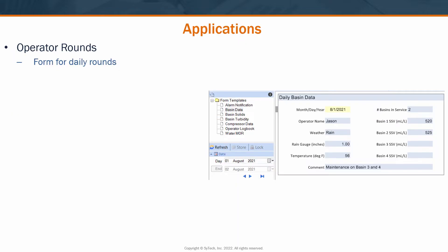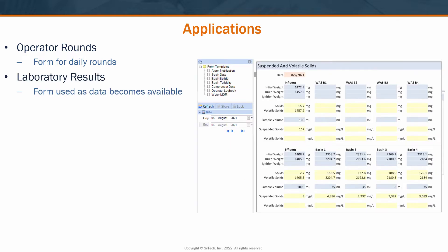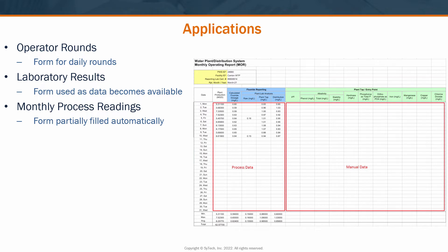In many processes, there are certain data points that just aren't easily automated. For example, in wastewater, there could be operator round data, lab test results, or maybe there are just certain I/O sensors that haven't yet been installed in the facility.